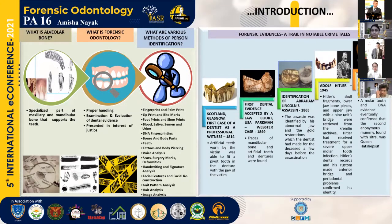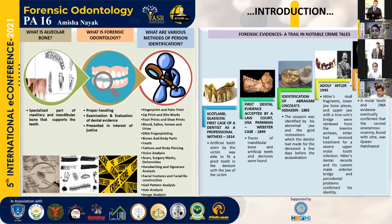Methods of person identification include fingerprint and palm print, lip print and bite marks, footprint and shoe prints, various body fluids, DNA fingerprinting, hard tissues such as bones and teeth, tattoos and body piercing, voice analysis, scar surgeries, marks, deformities, handwriting and signature analysis, facial features and facial reconstruction, gait pattern analysis, hair analysis, and image analysis.